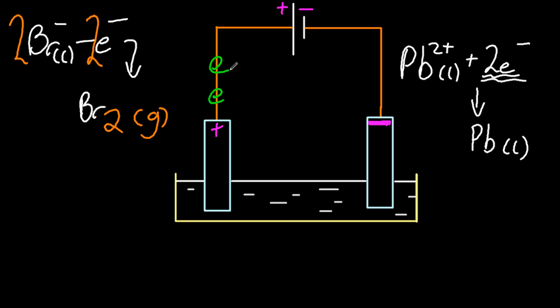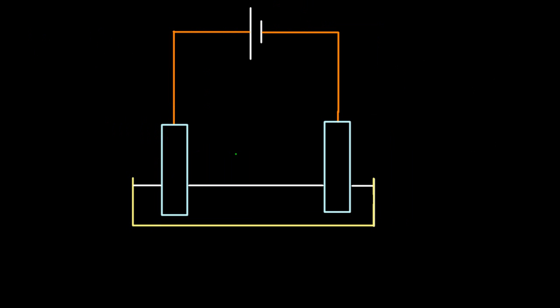So, two electrons are pulled off of the bromide and pumped around to the negative electrode, where the lead picks them up. Electrons don't want to do that. That's what the power supply is for. It puts electrons where they don't want to go. They don't want to be pulled off the bromide and put onto the lead.